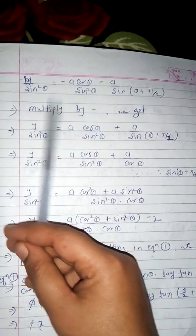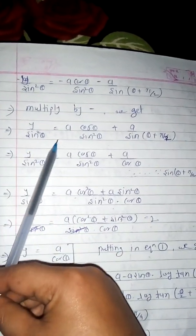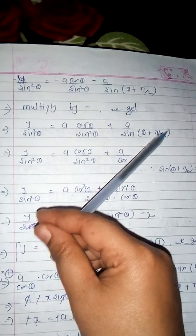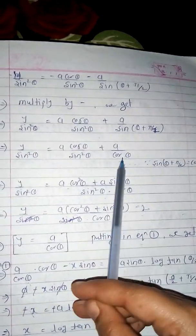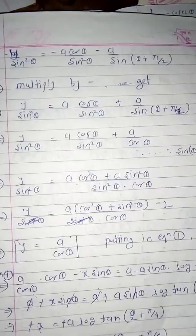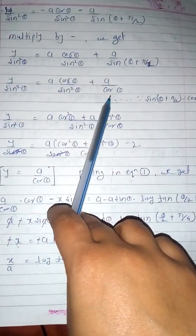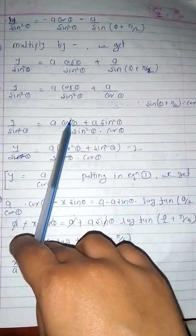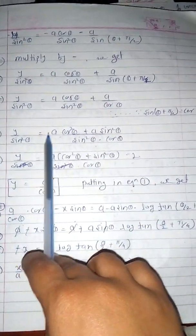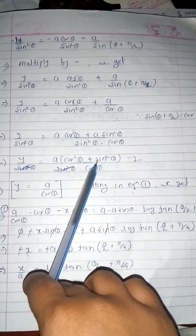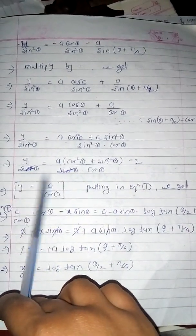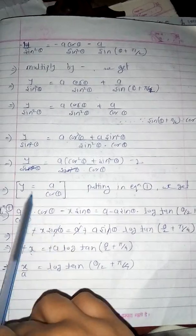Multiplying the whole equation by −1 to remove the minus sign: y/sin²θ = a·cos θ/sin²θ + a/sin(θ + π/2). Since sin(θ + π/2) = cos θ, this gives y/sin²θ = a·cos θ/sin²θ + a/cos θ. Simplifying: y = a·(cos²θ + sin²θ)/cos θ = a/cos θ, using cos²θ + sin²θ = 1.